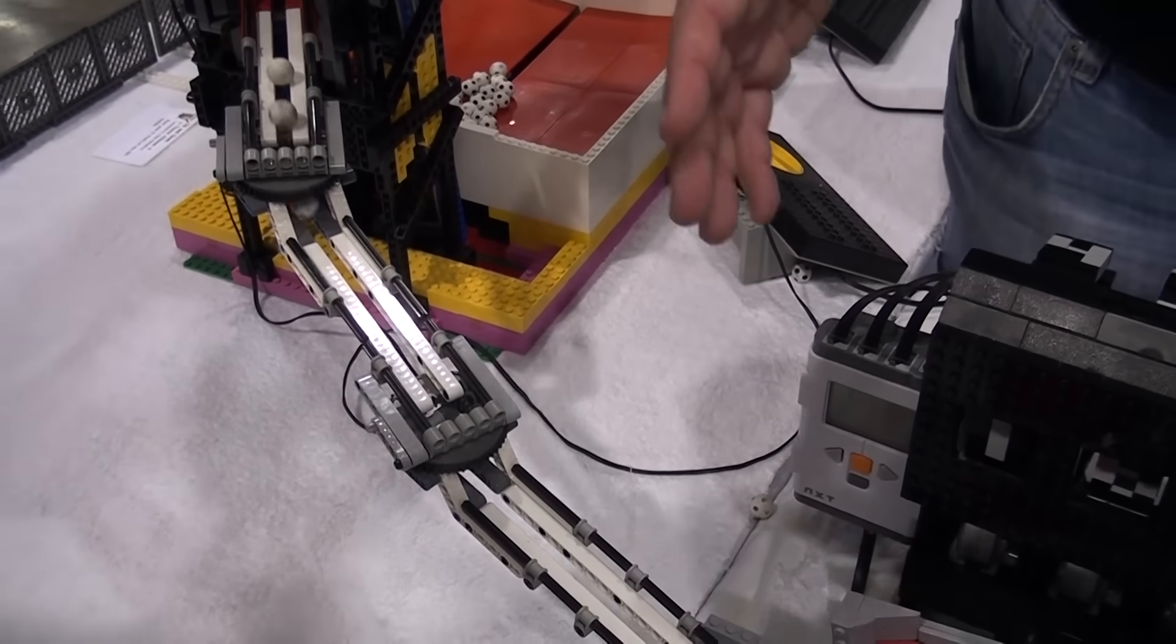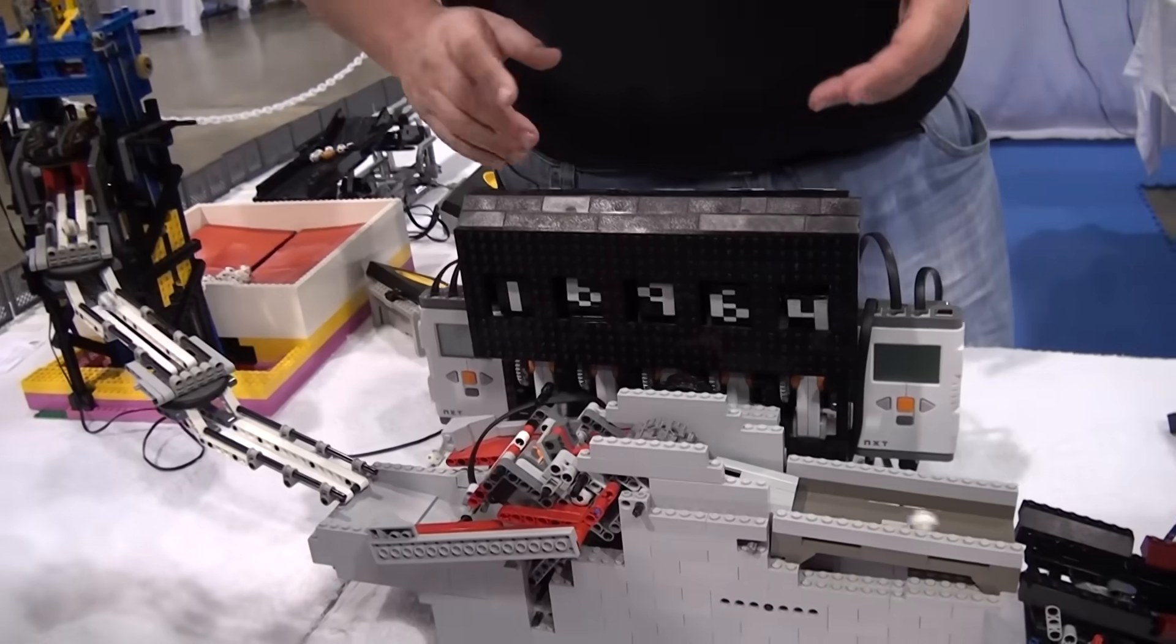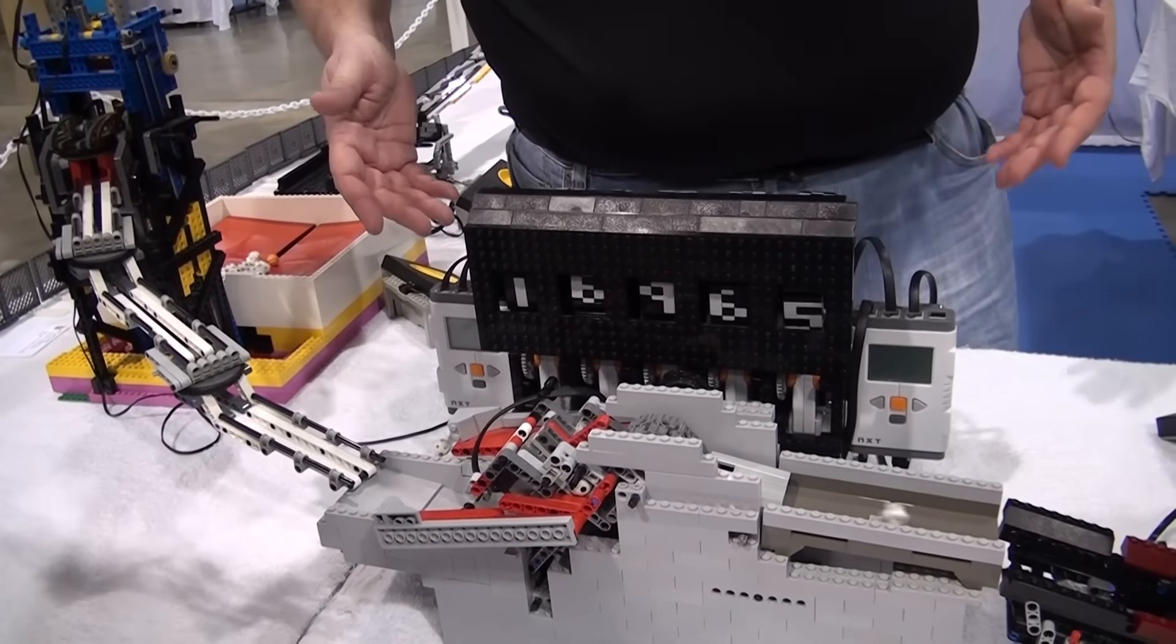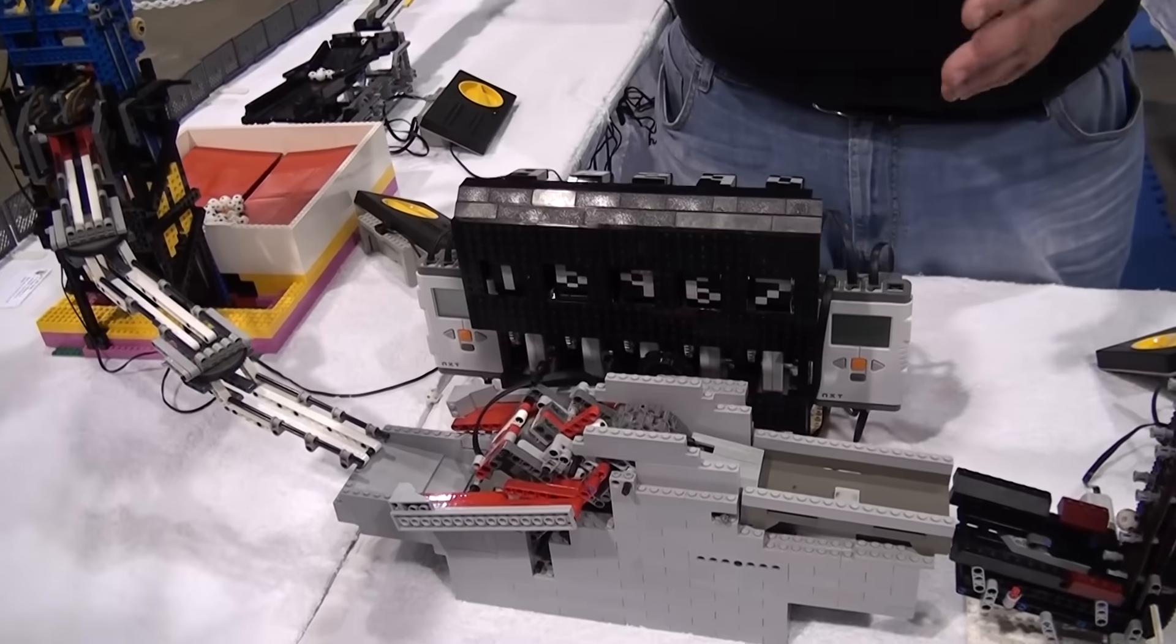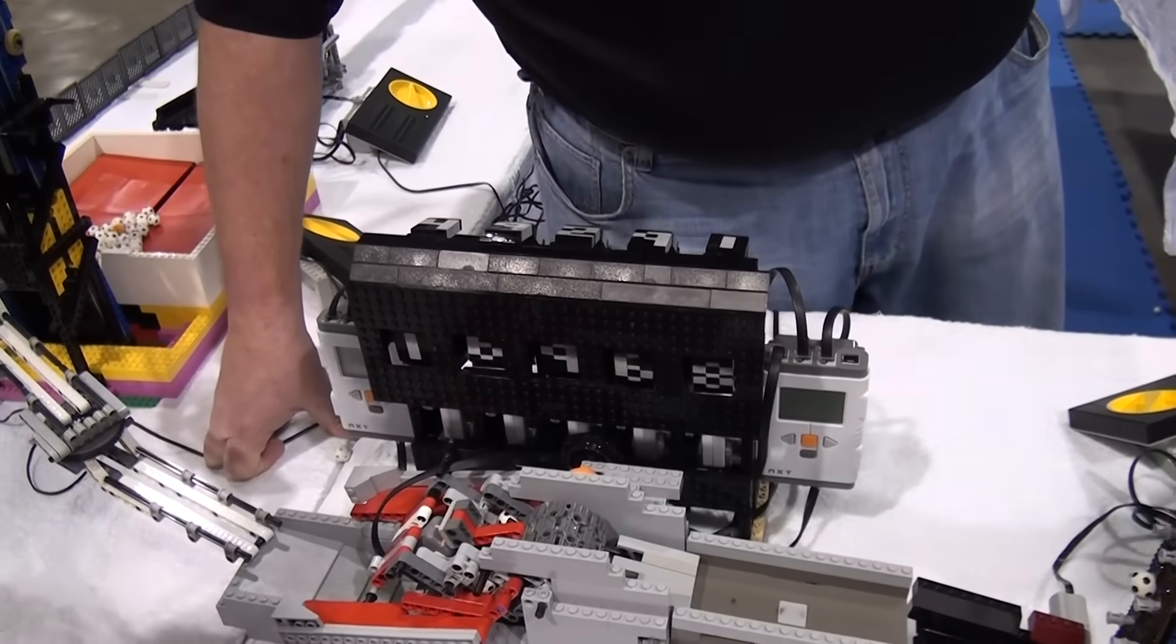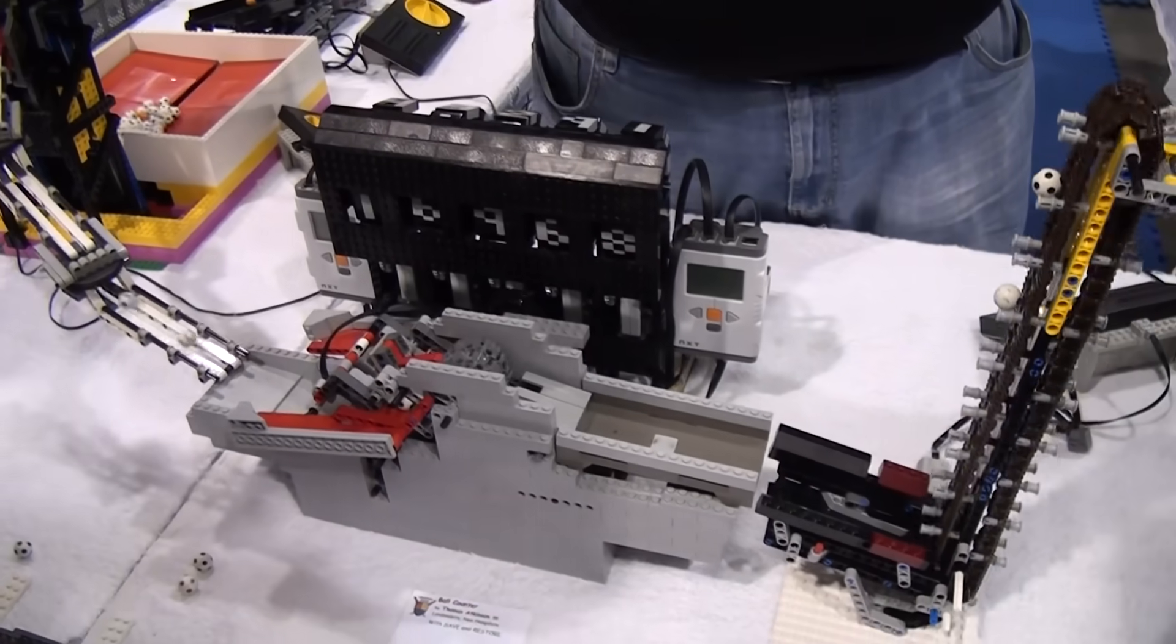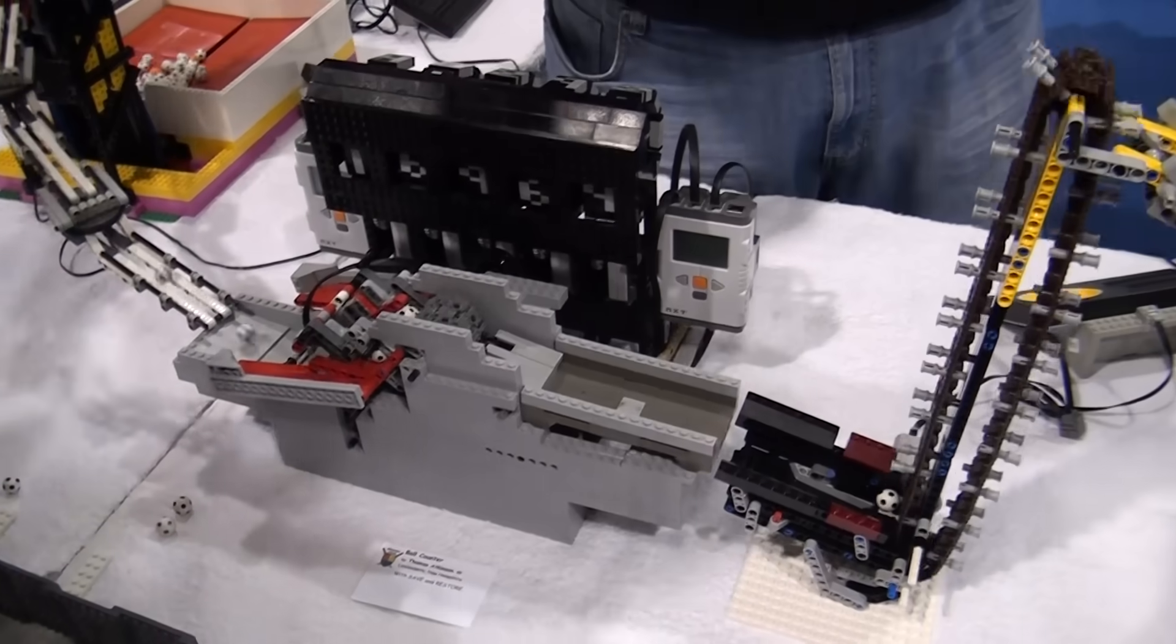Then we're on to this nice NXT based counter module that Tom has, just counting away on the balls. I don't know what the count is on the other side. There's a little discrepancy between this side of the table and that side of the table. I'm sure a couple balls, it could be that there was some bypassing going on.